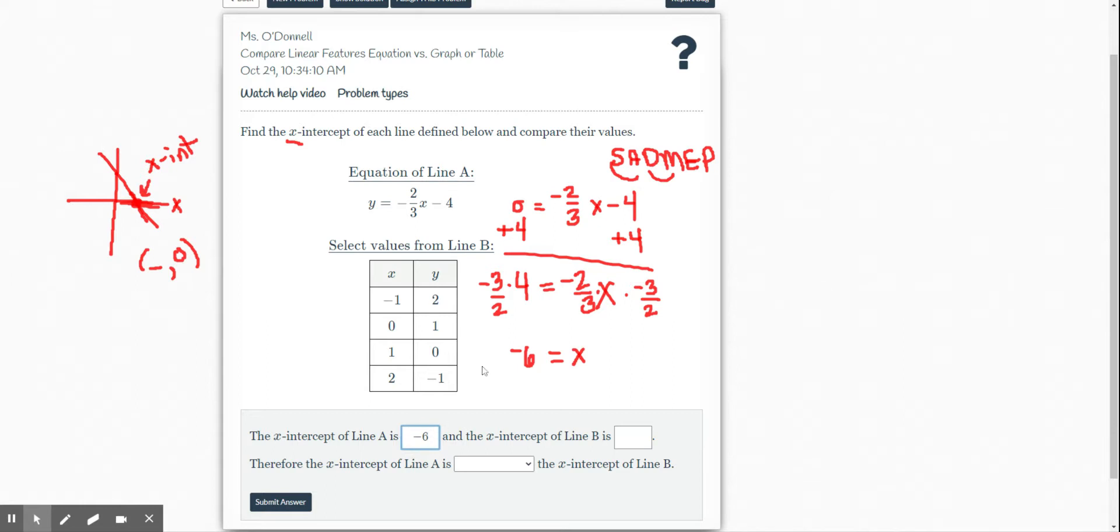And next we have to find the x-intercept of line B. Well, that's nice because it's showing us both our x-intercept and our y-intercept here in our table. We know our x-intercept is when our output is zero. So we see our x-intercept right there. So the x-intercept at line B is going to be 1.